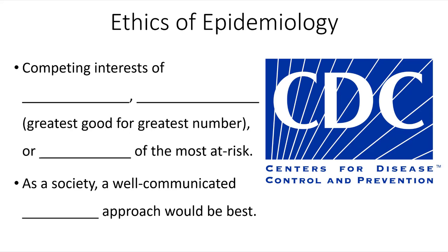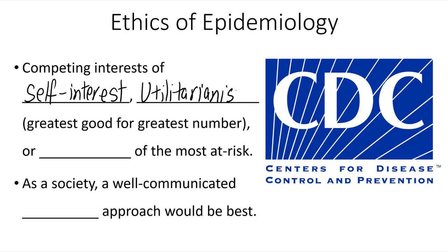If you recall in module one, we were talking about the different foundations for making judgments or moral decisions, and that there are competing interests of self-interest or egoism, utilitarianism — which is the greatest good for the greatest number — or also protection for the most at risk, which is altruism or virtue. These can come into conflict, especially when trying to deal with regulations or procedures related to epidemiology.